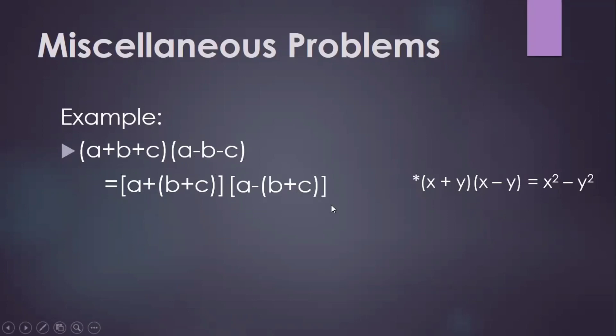In here, a represents x, and b plus c represents y. Then now we're going to square the first term. So that will be equal to a squared minus the square of the second term, b plus c. And then after that, we have to expand the square of the binomial.